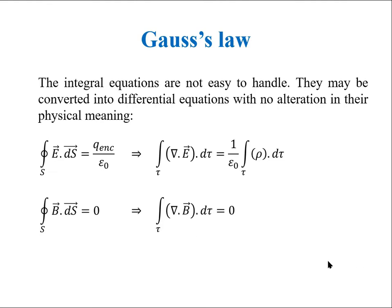Now by comparison, these two integral equations can be converted into differential equations like this and this. Now this equation is the statement of Gauss's law in electrostatics and this is also a form of Gauss's law in magnetostatics and it says that there is no magnetic monopole in the nature.